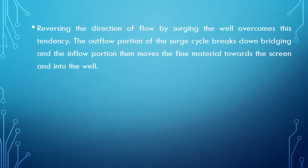Reversing the direction of flow by surging the well overcomes this tendency. The outflow portion of the surge cycle breaks down the bridging, and the inflow portion then moves the fine material towards the screen and into the well. This surging causes the reversal of flow through the screen opening that will rearrange the formation particles and break down the bridging of groups of particles.